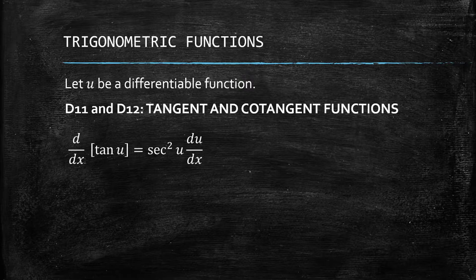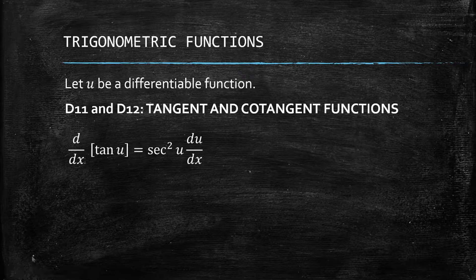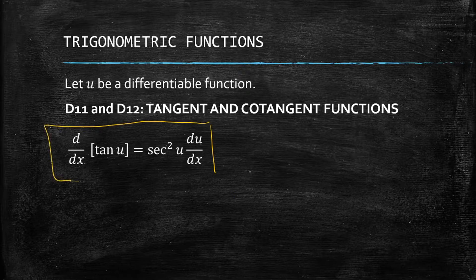For D11, the derivative of tangent is secant squared of u. Since u is a function, we're going to have the du/dx here. So again, the derivative of tangent is secant squared of u times du/dx.